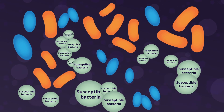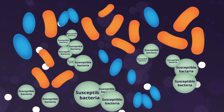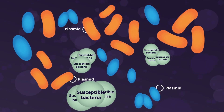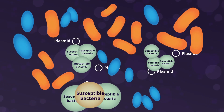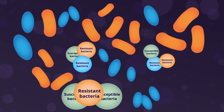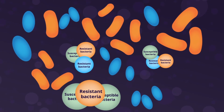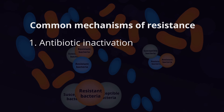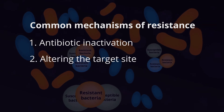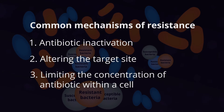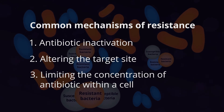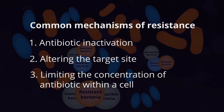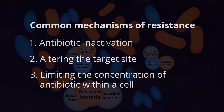Resistance occurs when bacteria that are usually susceptible to an antibiotic develop mechanisms to withstand their effects. Resistance can occur due to bacterial adaptations, the acquisition of genetic material, or alterations in gene expression. The three most common ways that bacteria achieve resistance are by inactivating the antibiotic, altering the target site, and/or limiting the concentration of antibiotic within the cell. Bacteria may utilize a combination of different mechanisms simultaneously, and there are multiple pathways and gene variants that encode for similar resistance traits.